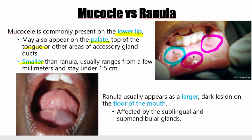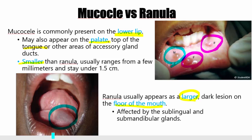Now let's look at the ranula. A ranula is large, first of all, and the keyword is floor of the mouth. Floor of the mouth, big, darker color. This is caused because the sublingual and submandibular glands and their ducts open somewhere right under the tongue, which is why the swelling occurs in that area.